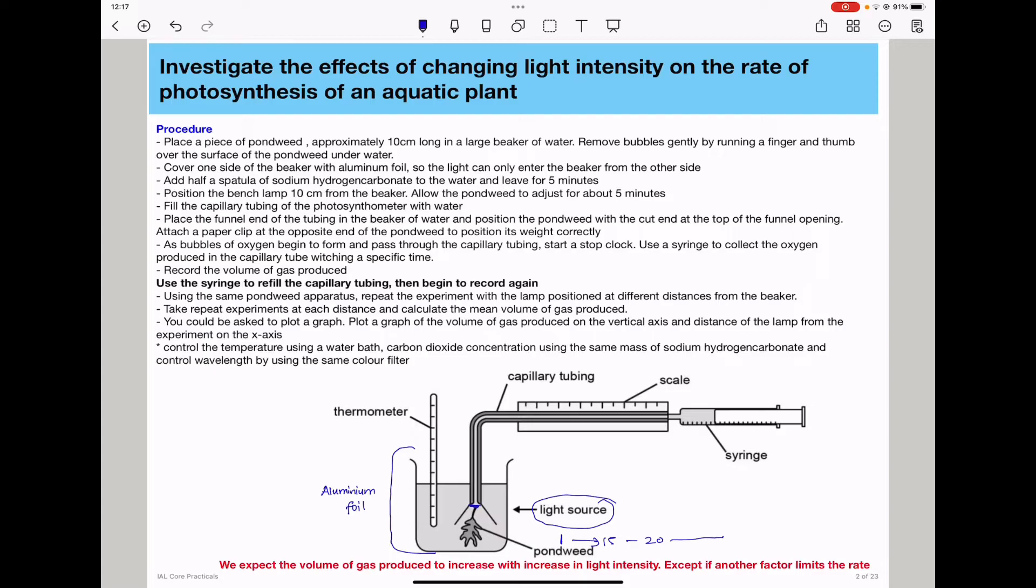So my procedure is as below. You need to place a piece of pondweed, approximately 10 centimeters long in a large beaker of water. Remove bubbles gently by running a finger and thumb over the surface of the pondweed underwater. Then you cover one side of the beaker with aluminium foil so that the light can only enter the beaker from one side. As you can see, light should only come from this direction.